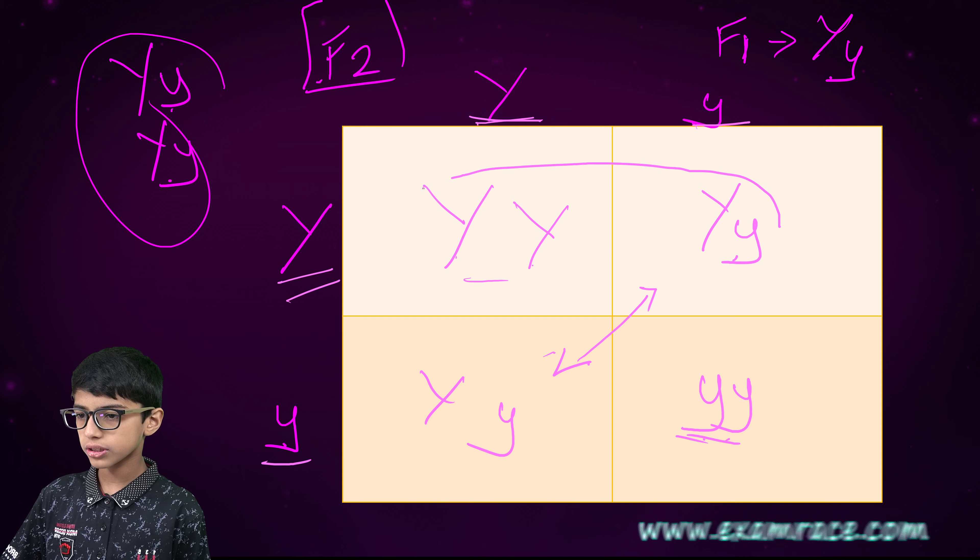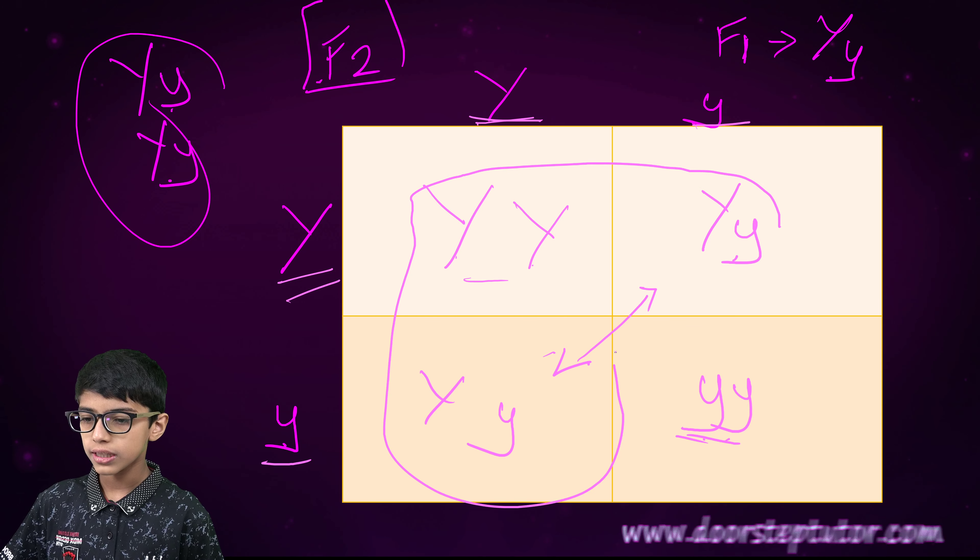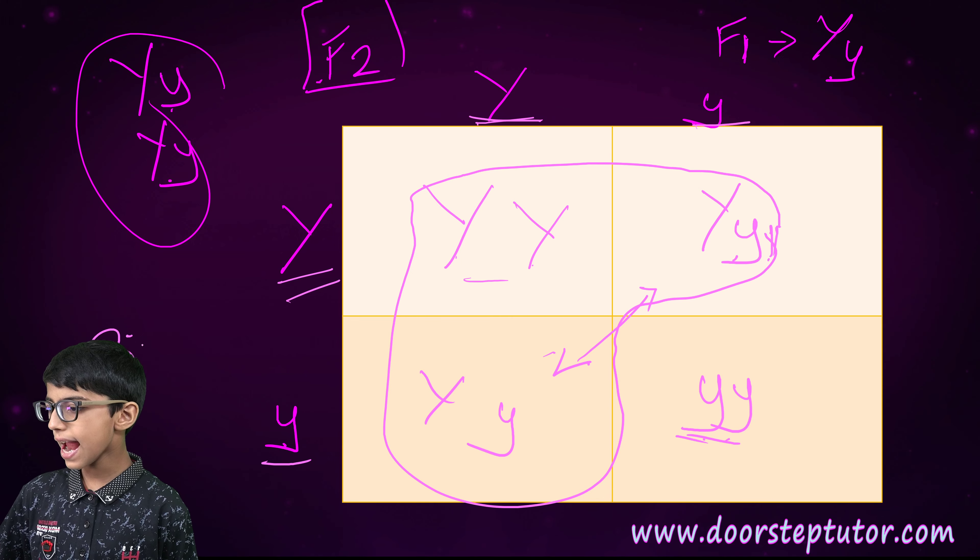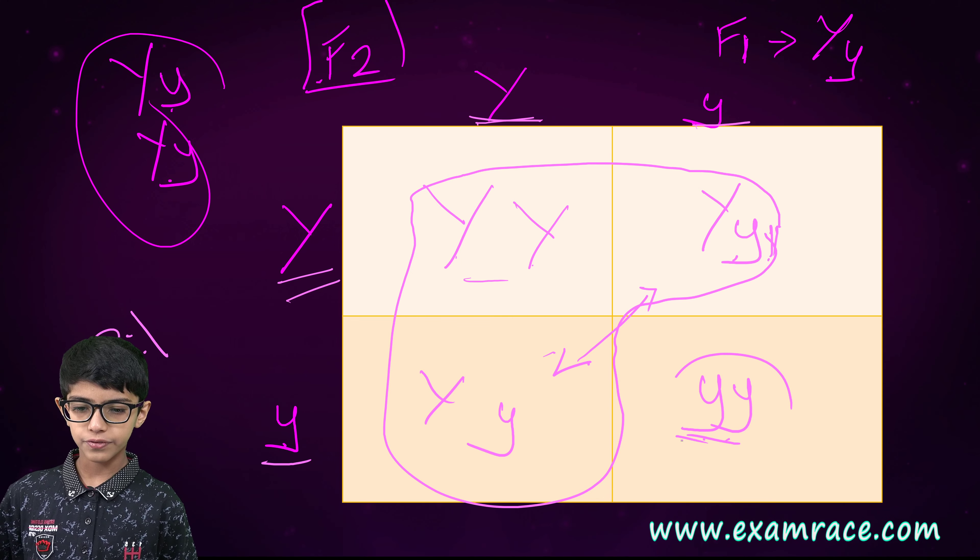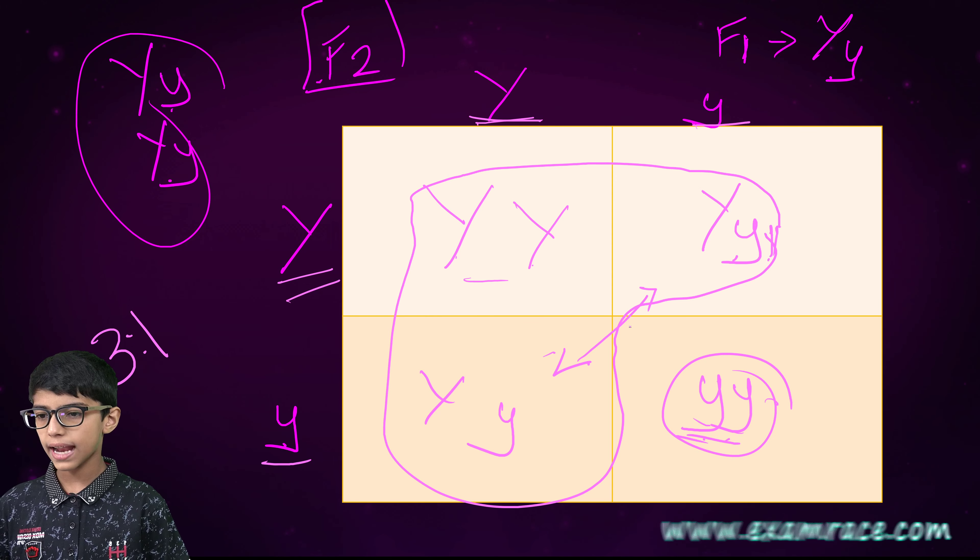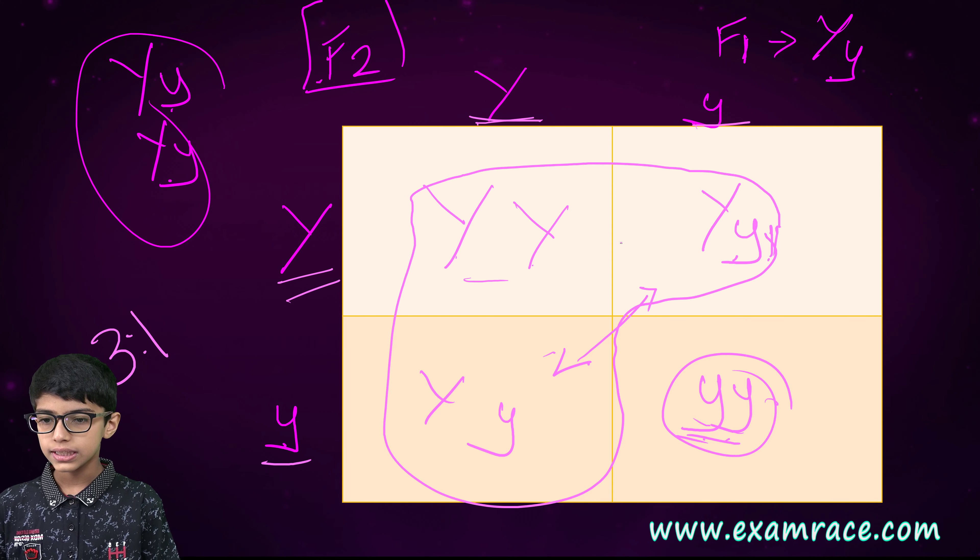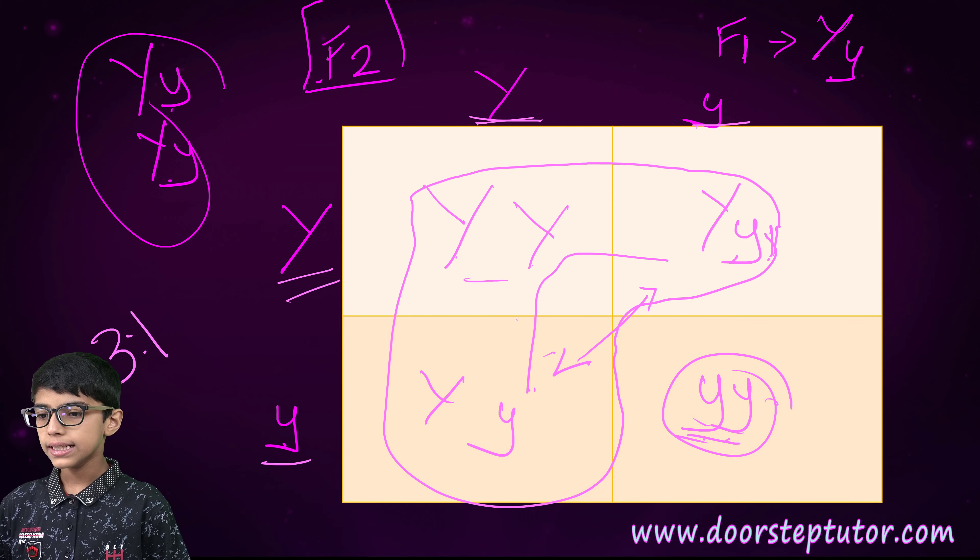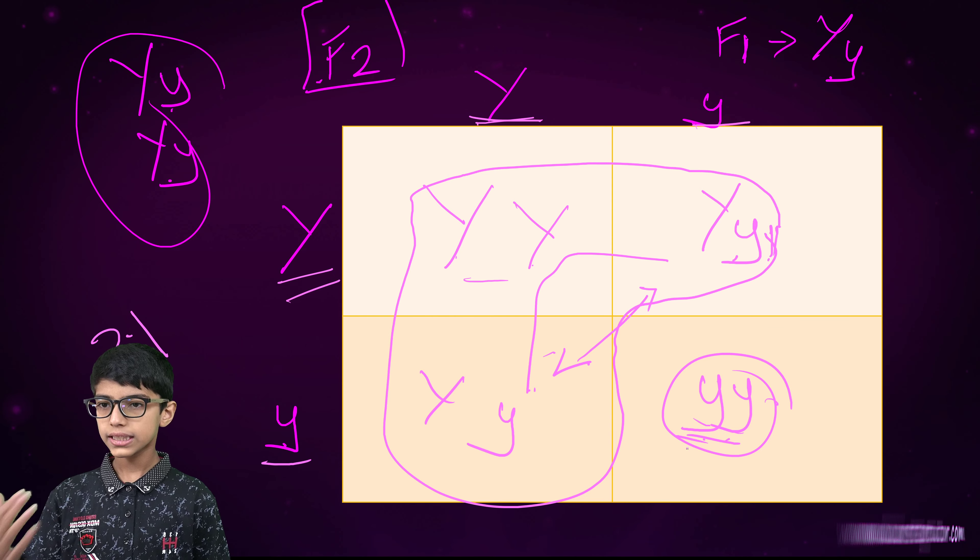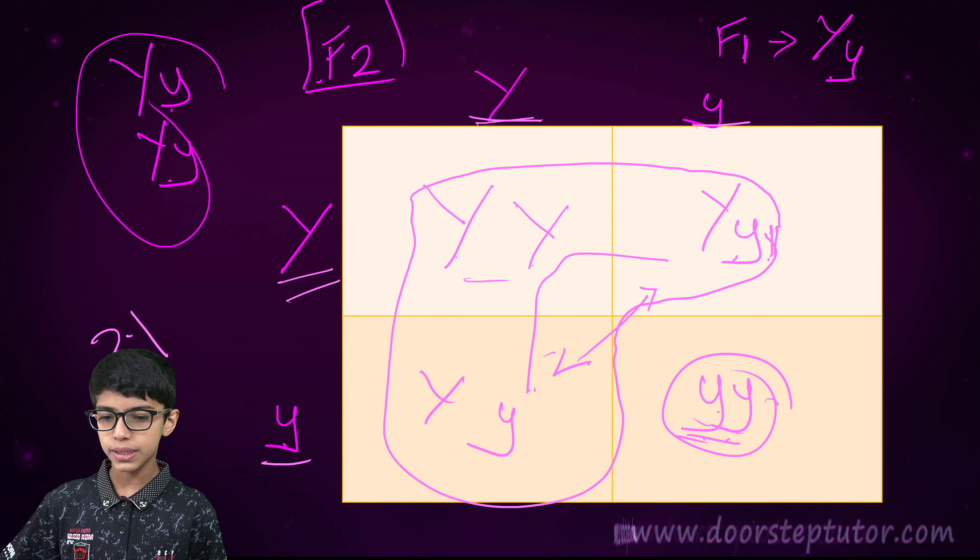But as we learned, the dominant, green is dominant. Therefore, these three will be on one side, and we have this alone, as this has both yellow seeds. And green is dominant. Therefore, three would be green seeds and one would be a yellow seed.